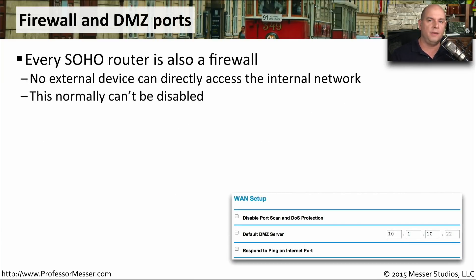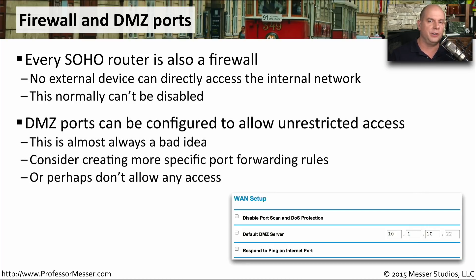One nice capability of these small office home office routers is that they are also firewalls, helping prevent anyone from accessing our internal network from the outside. This firewall functionality is not something that can commonly be disabled, and for good reason — it is one of the most important capabilities of these wireless routers. Up to this point we've described network access as either inside or outside, but there is a middle ground called a demilitarized zone, or DMZ. Many wireless routers have this DMZ functionality where you can put servers and services on a network that isn't on the outside and isn't on the inside, but is a protected network. These services are usually accessed by configuring port forwarding rules that send people into the DMZ network instead of your internal network.